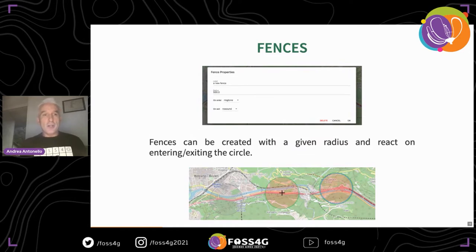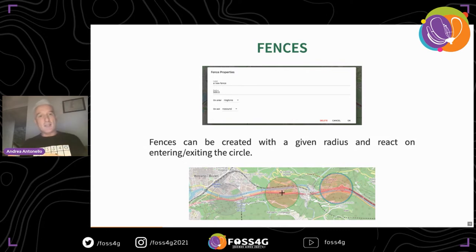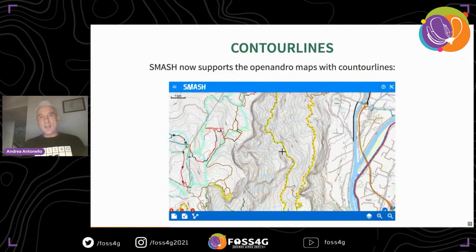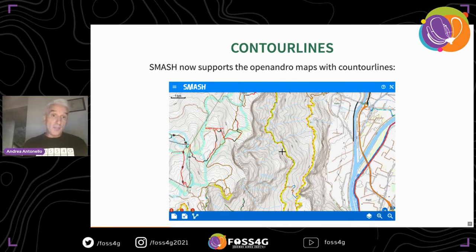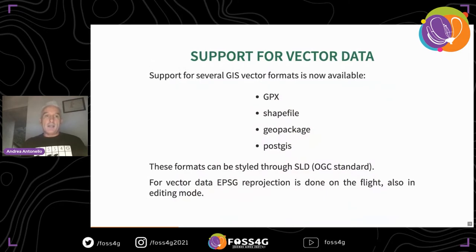Lockdown brought in fences — where we live, at a certain point you could only walk 200 meters around your flat, so we added fences where you can create a boundary of a set radius and enable ringtones or alarms when you enter or exit the fence. Also, something Geo Paparazzi had but I want to highlight: SMASH brought back contour lines on offline maps using OpenVendor Maps, which is extremely useful for certain types of surveys — a big feature that we got back in.